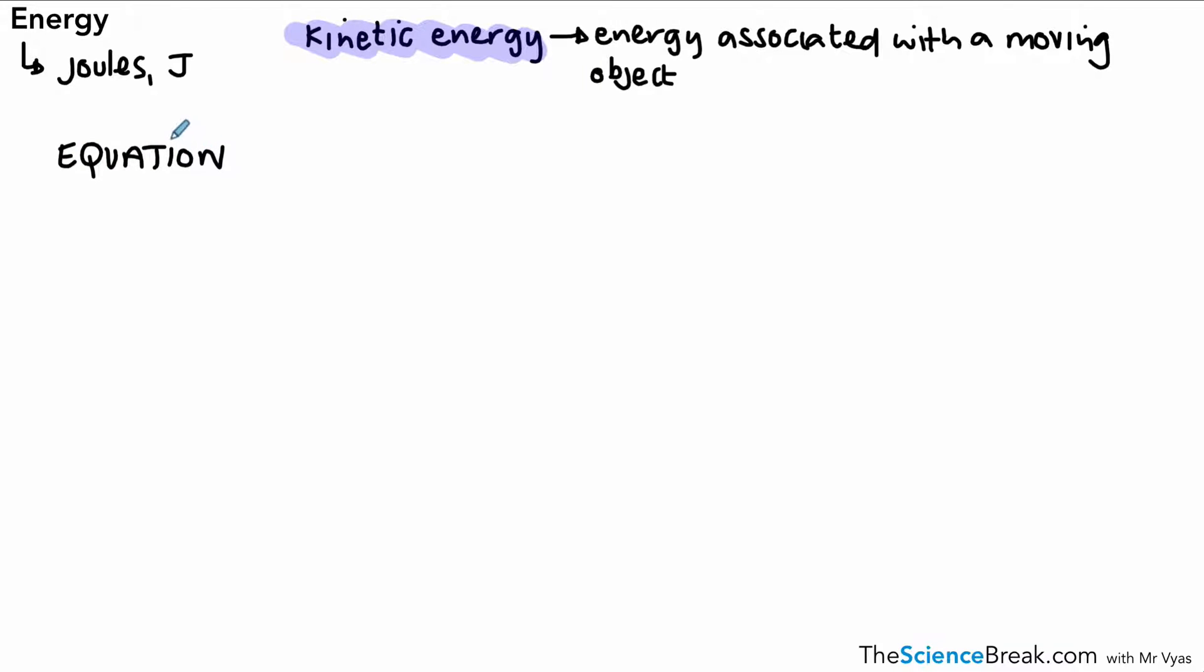Now, to calculate this we need to use an equation, and unfortunately this is an equation that you need to know and remember. You won't be given this in your exam. There are over 20 you need to remember for your exam, and this is the first of those. So kinetic energy is 0.5 times mass times speed squared. You might see it written like this, and that looks slightly more complicated, but basically this is kinetic energy, half is 1/2, mass is m, and v squared is speed squared.